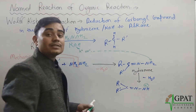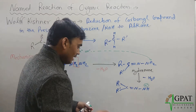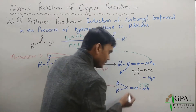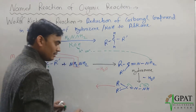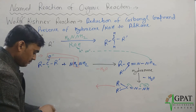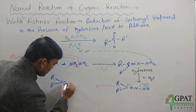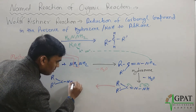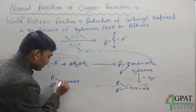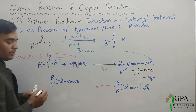This negative charge is very unstable, so resonance occurs. After resonance, the negative charge shifts — giving the structure R-C(R')-N=N with a negative charge — which is also unstable.